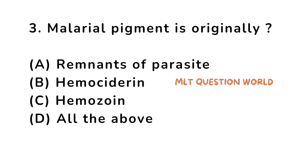Question number 3. Malarial pigment is originally: option A. Remnants of parasite, option B. Hemosiderin, option C. Hemozoin, option D. All of the above. Which of the following is the malarial pigment? The right answer is Hemozoin. Hemozoin is the malarial pigment.